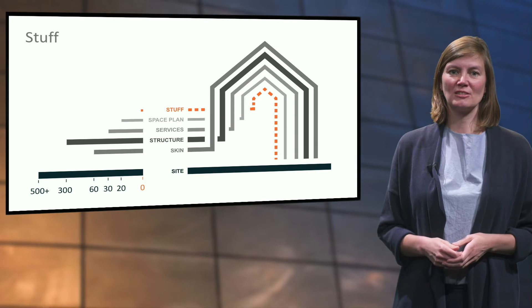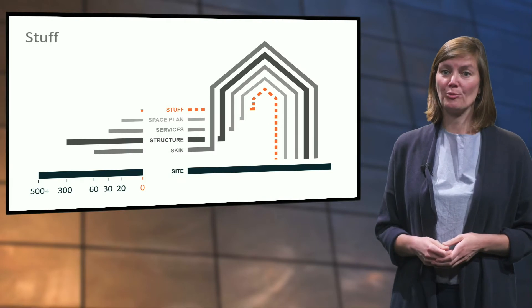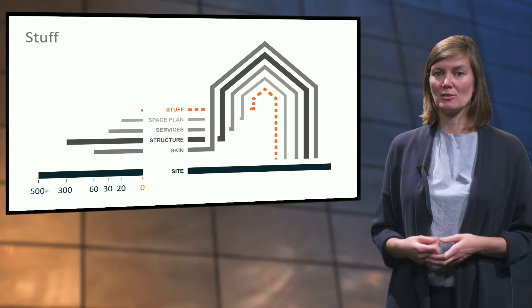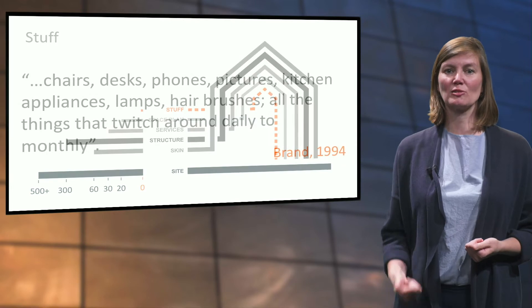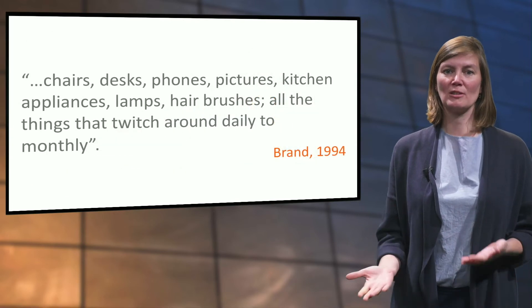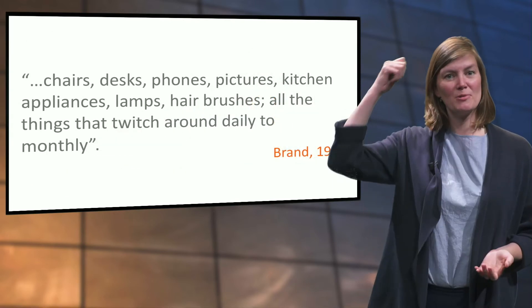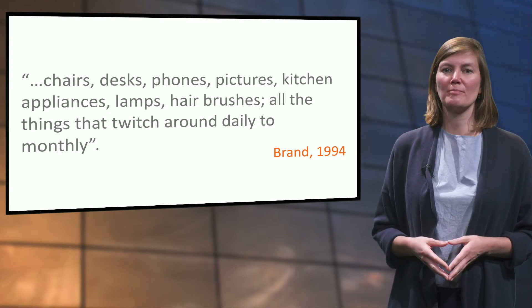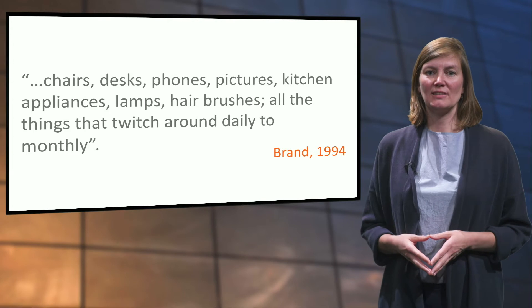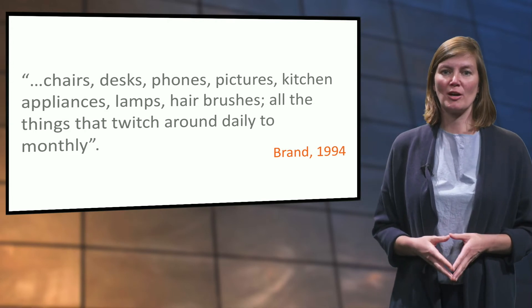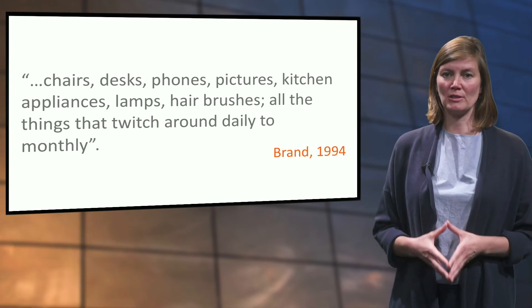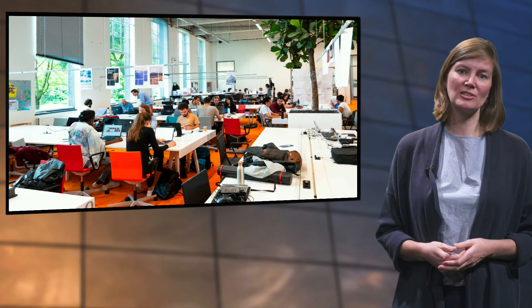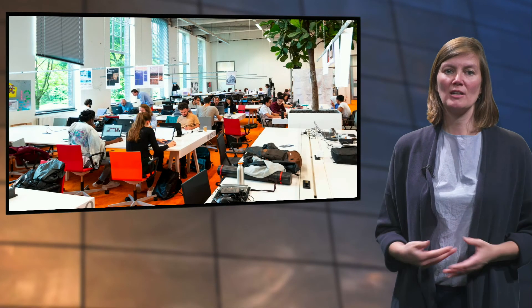The sixth layer consists of the stuff within the building. Brandt sums up chairs, desks, phones, pictures, kitchen appliances, lamps, hairbrushes — all the things that move around daily to monthly. Within BK City, chairs are a good example of stuff that is being moved around the building constantly: sometimes combined in a presentation setting, and sometimes used individually at working tables.